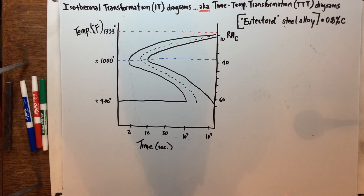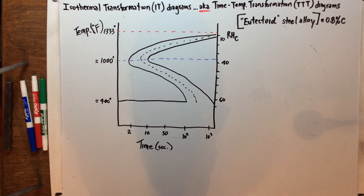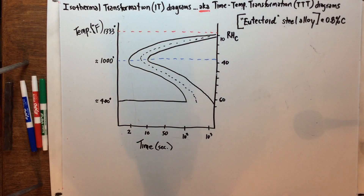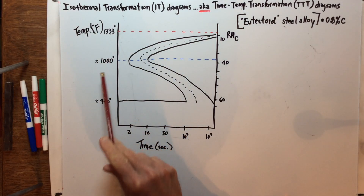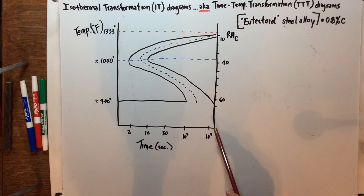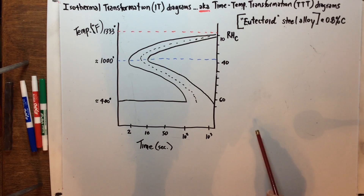This is actually an isothermal transformation diagram, also known as a time-temperature transformation diagram. As I told you last class, every one of these diagrams is unique to the specific steel alloy it represents. I chose a eutectoid steel alloy, which we know is roughly 0.8 percent carbon. On the left-hand side we have temperatures, and then we have a time scale which is a logarithmic scale — it could stretch out to ten to the fourth, ten to the sixth, even half a day in minutes.